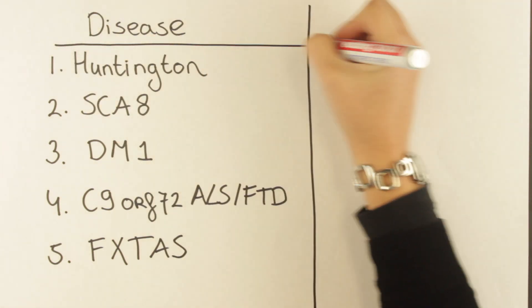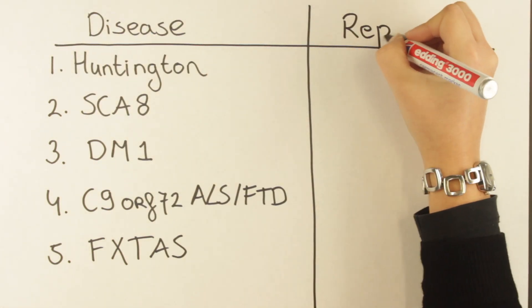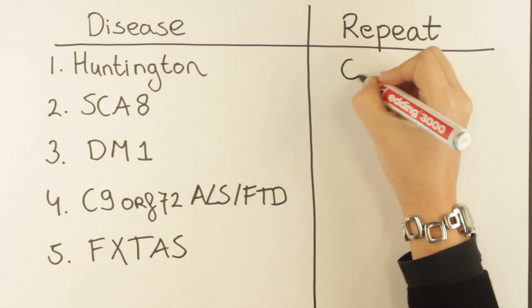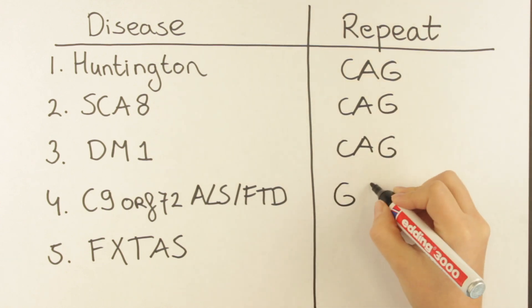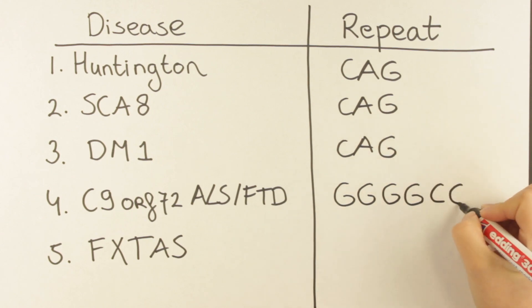These diseases are caused by elongation of different repeats in different genes in the human genome. In this video, we will mainly focus on the CGG repeat of FXTAS and the G4C2 repeat for C9 ORF-ALS-FTD.